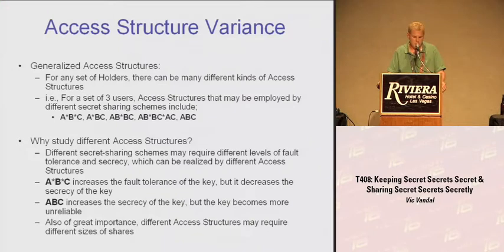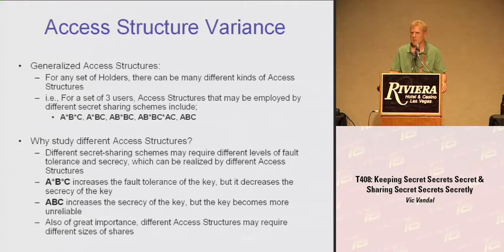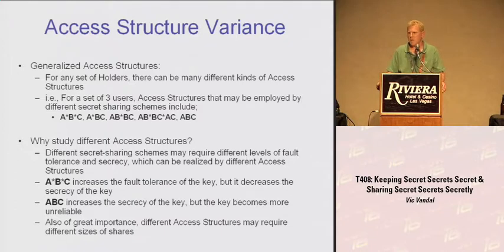For any set of holders, there can be many different kinds of access structures. For a set of three users, you can use a lot of different access structures. A or B or C means any one of them can retrieve the information. Or you can have A hold a big piece, and B and C together can recover the protected data. Or A, B, and C altogether can recover it. Just with three holders, you can have many different access structures.